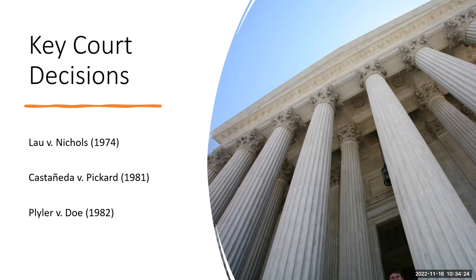The second case is Castaneda versus Picard, decided by the U.S. Court of Appeals for the Fifth Circuit in 1981, which ruled that LEAs must create and maintain programs for multilingual learners in which three requirements are followed. First, the educational theory underlying the language assistance program is recognized as sound. Second, the program and practices must have effective implementation with adequate resources and personnel. Third, the program succeeds after a legitimate trial in producing results indicating that students' language barriers are actually being overcome within a reasonable period of time.